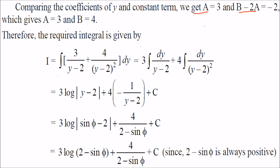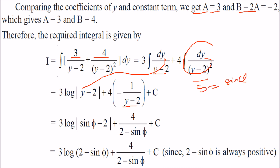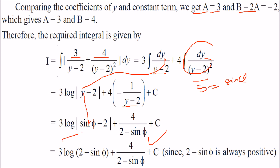With A = 3, B = 4 found, we integrate. The integral of 1/(y−2) gives log|y−2|, and the integral of 1/(y−2)² gives −1/(y−2). Since y = sin φ, replace y with sin φ to get the final answer: log|sin φ − 2| − 1/(sin φ − 2).